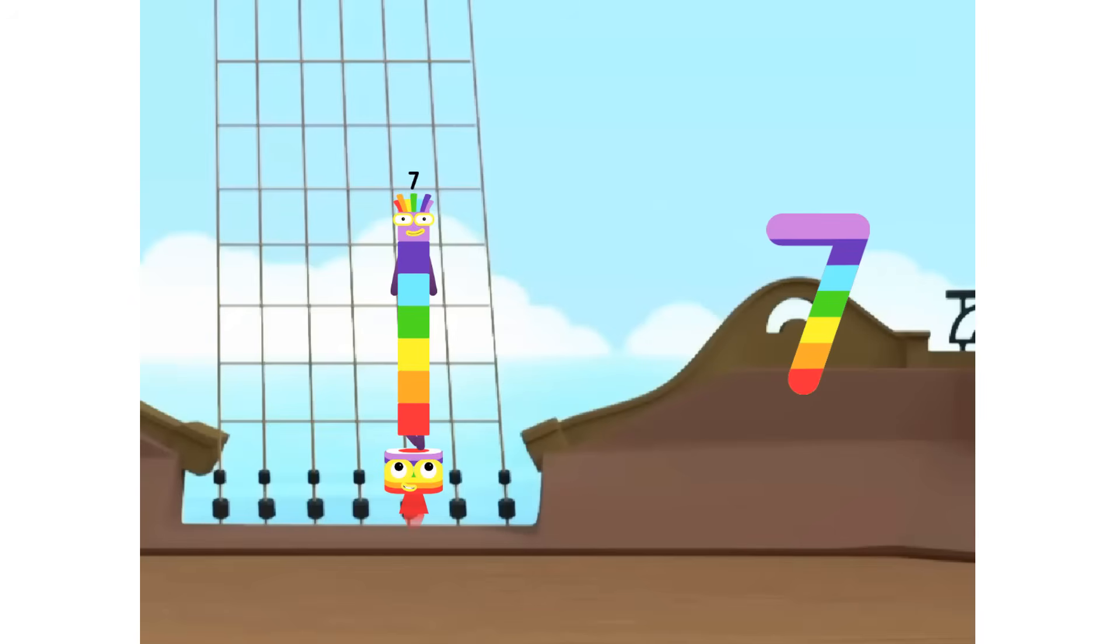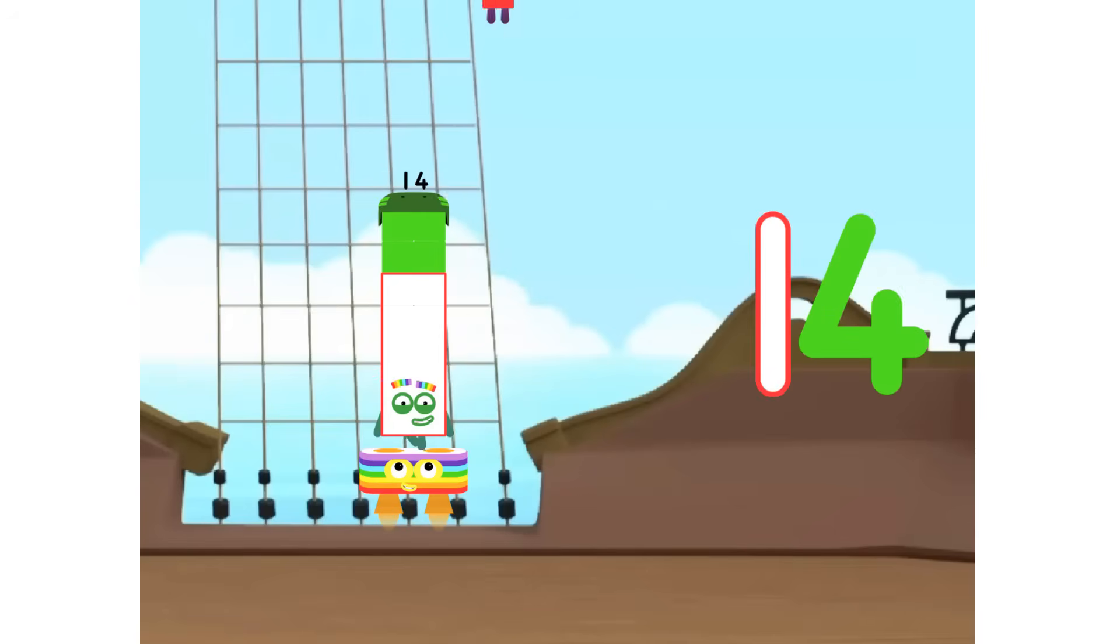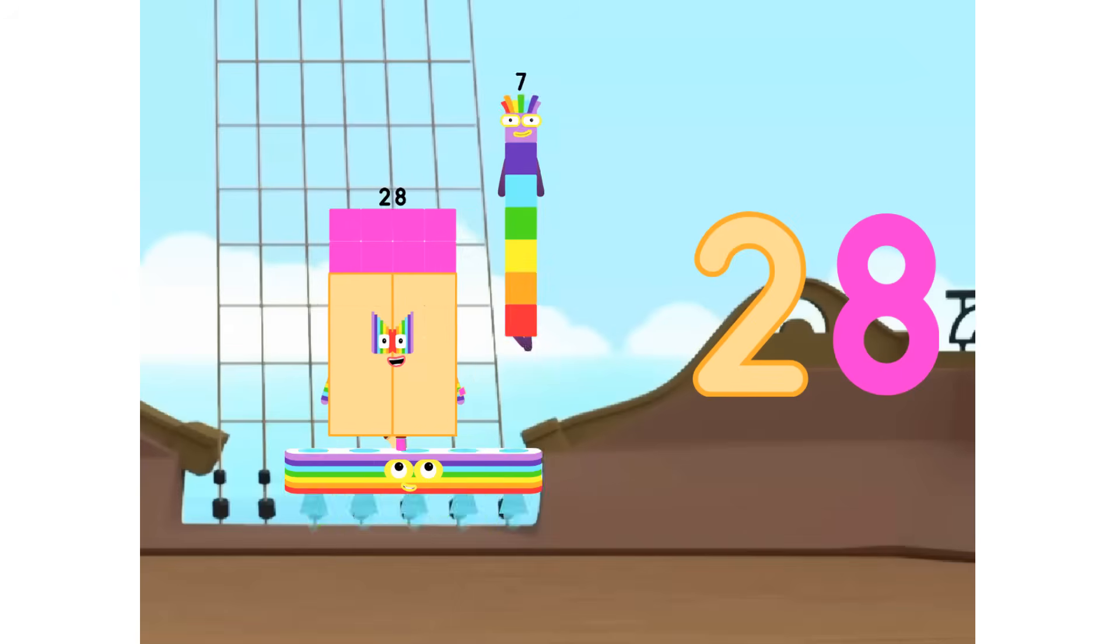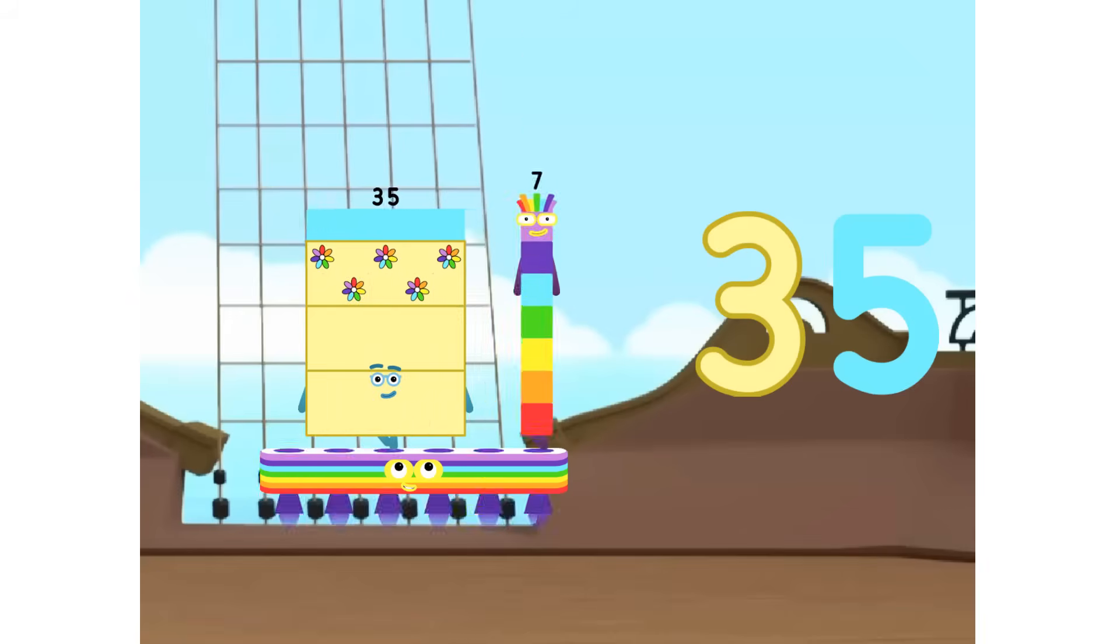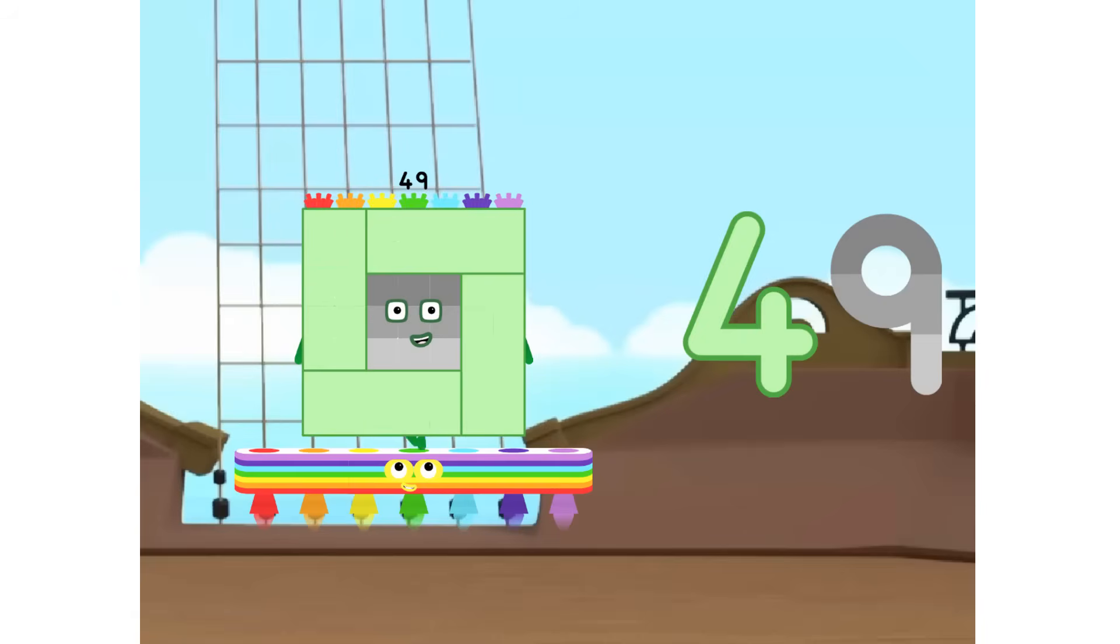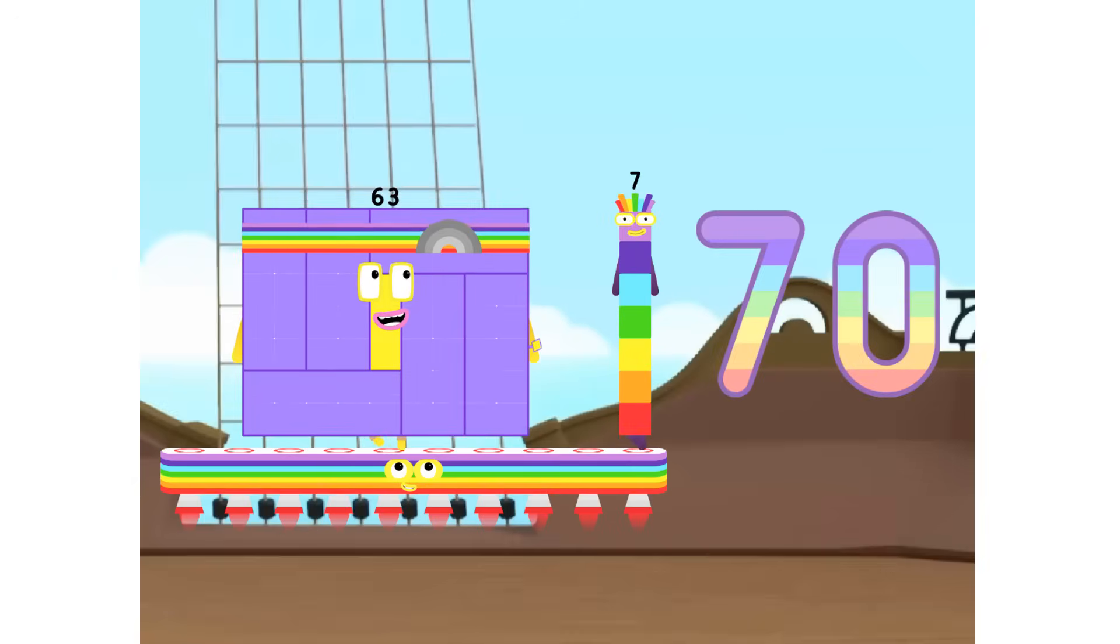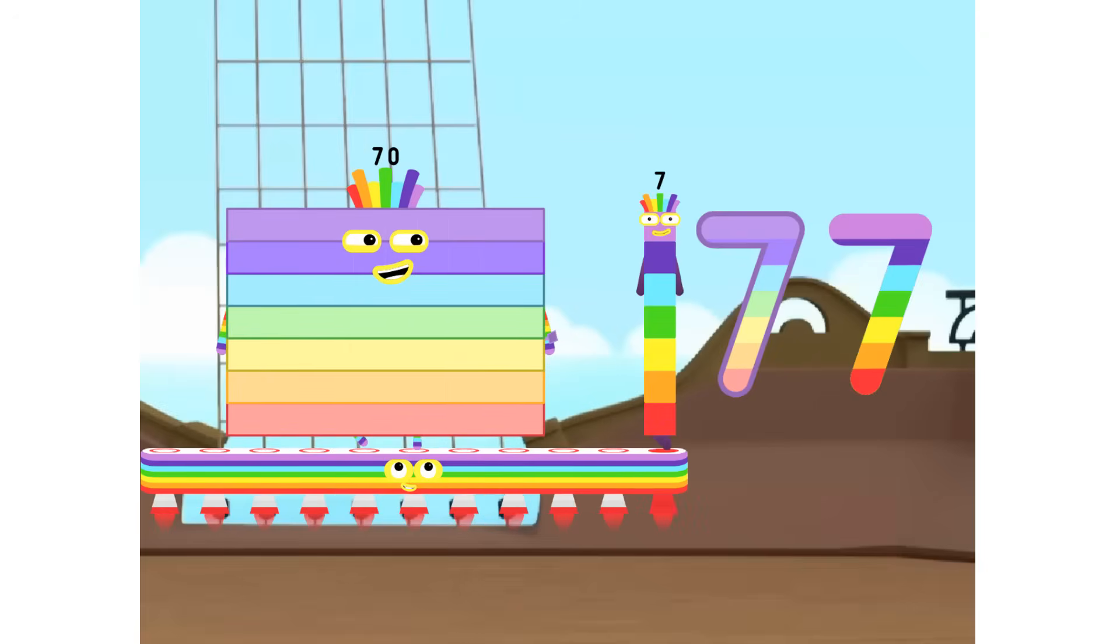1 seven is 7, 2 sevens are 14, 3 sevens are 21, 4 sevens are 28, 5 sevens are 35, 6 sevens are 42, 7 sevens are 49, 8 sevens are 56, 9 sevens are 63, 10 sevens are 70.